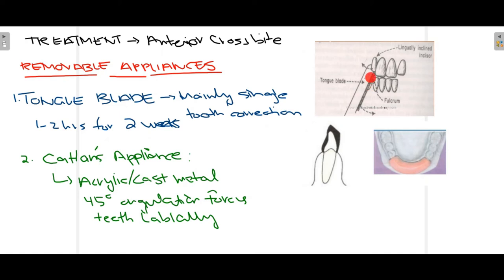The wooden stick is inserted in the mouth and placed palatally against the tooth that needs to be corrected. This exerts pressure in the buccal direction and is done for one to two hours over two weeks, allowing some repositioning. However, this appliance can only help with one or two teeth; it cannot correct a whole segment of the arch.